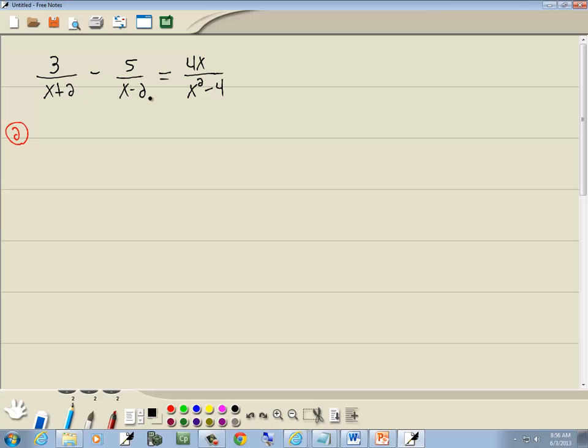Well, x plus 2 we can't do anything with, x minus 2 we can't do anything with, but x squared minus 4, two terms with a minus sign, is the difference of two squares. So we get 3 over x plus 2 minus 5 over x minus 2 equals 4x over x plus 2 times x minus 2.